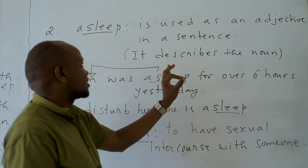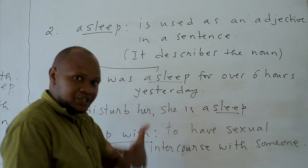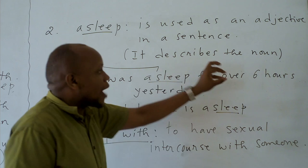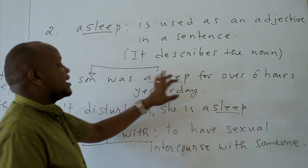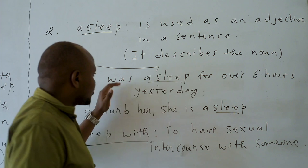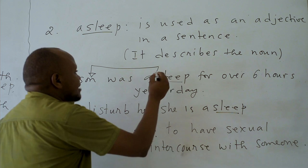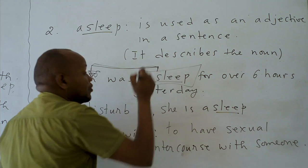Asleep is used as an adjective in a sentence. It can also be used as an adverb, but today we are teaching how to use asleep as an adjective. It describes and explains the noun. For example: my son was asleep for over six hours yesterday. This means that you are describing your son and the action of sleeping he did yesterday for over six hours. You use the word asleep as an adjective.